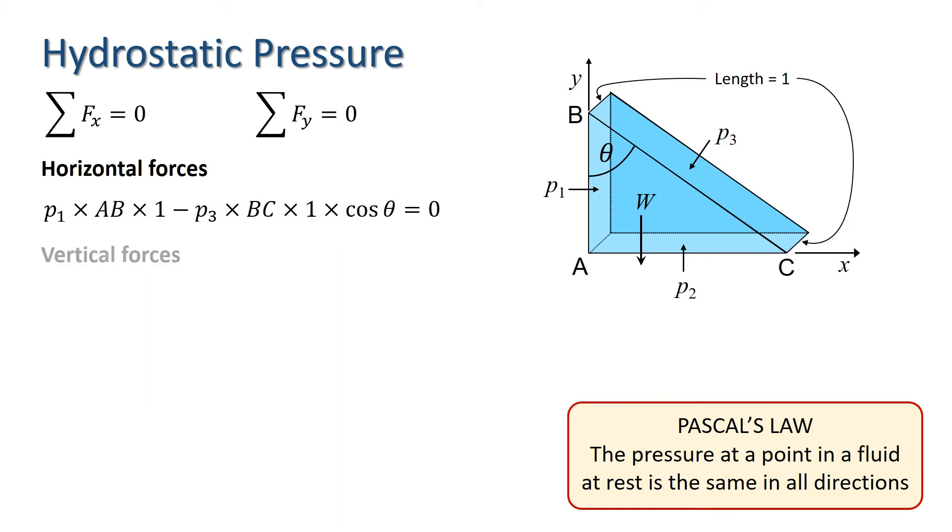Turning to the vertical forces, we have P2 times AC times one, which is the force on the bottom face of the prism, minus P3 times BC times one, which again is the force on the diagonal face, but this time times sin theta to resolve in the vertical direction, and minus W, which is the weight of the fluid in the prism of water.